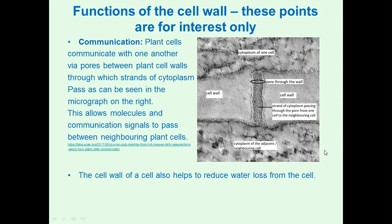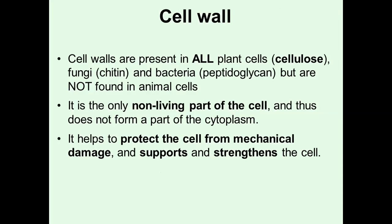Another function of the plant cell wall is it helps to reduce water loss from the cell, which is terribly important in plants. Since plants don't have a skeleton, they rely on water pressure against the cell wall to remain rigid, so water loss is a huge concern. Cell walls are present in all plant cells and in plant cells they're made of cellulose. They may have an extra component added, but that's not the norm, so we'll treat cellulose as the standard.